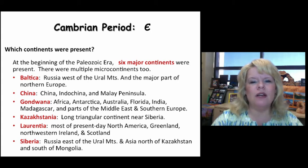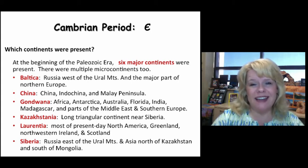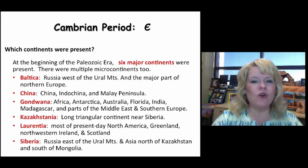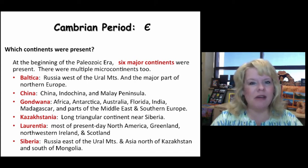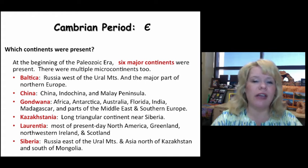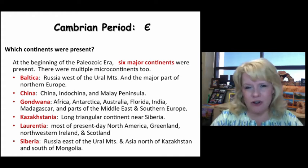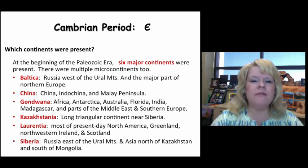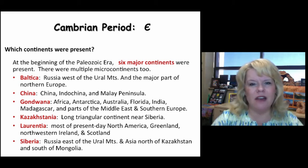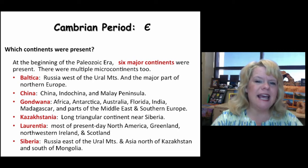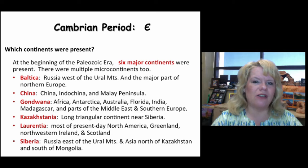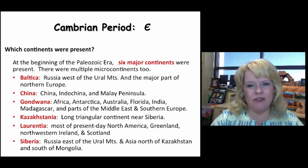For example, Juan de Fuca would be a microplate, sitting right by Washington State, Oregon, and Northern California. That microplate is extremely important to the geologic dynamics of that region, including volcanoes like Mount St. Helens. I'm not going to ask that you know how to spell all these continents, but you need to know the basic six and recognize that they belong together as the major continents that will assume different names throughout geologic time.